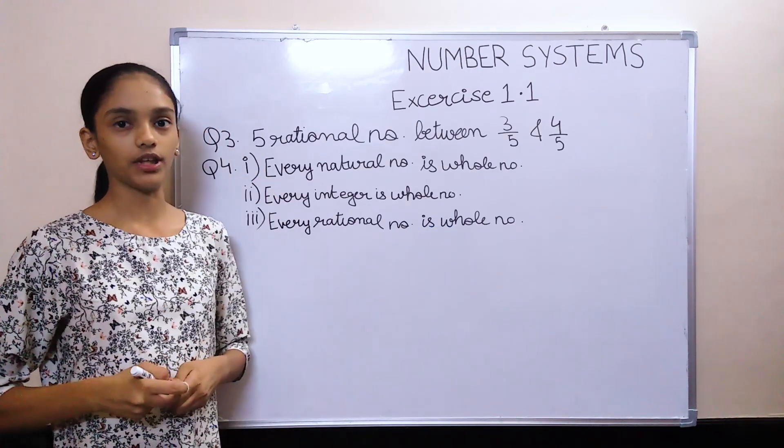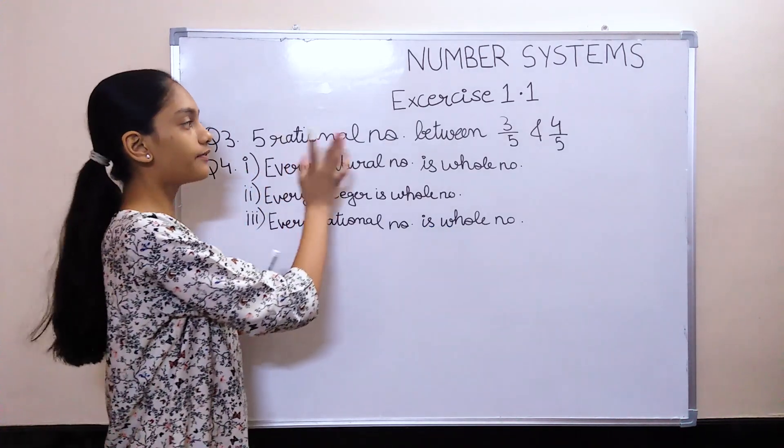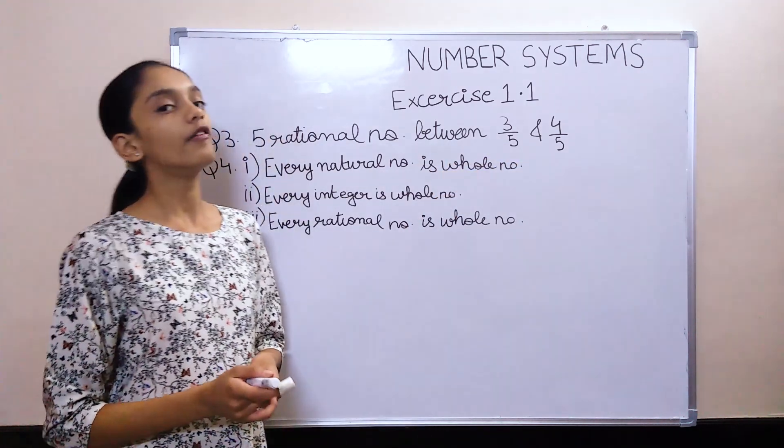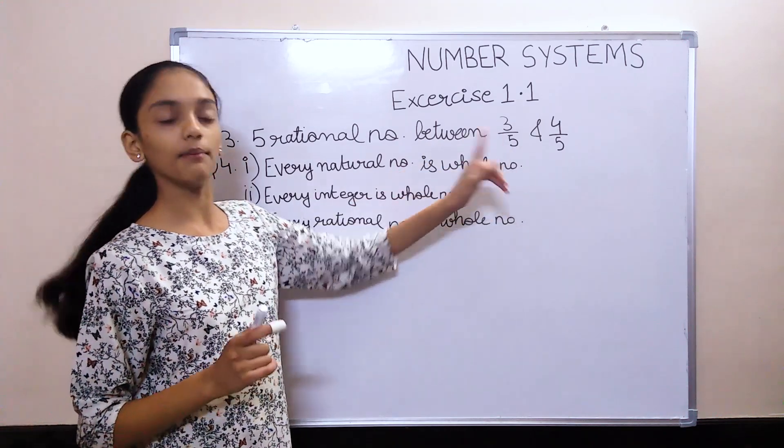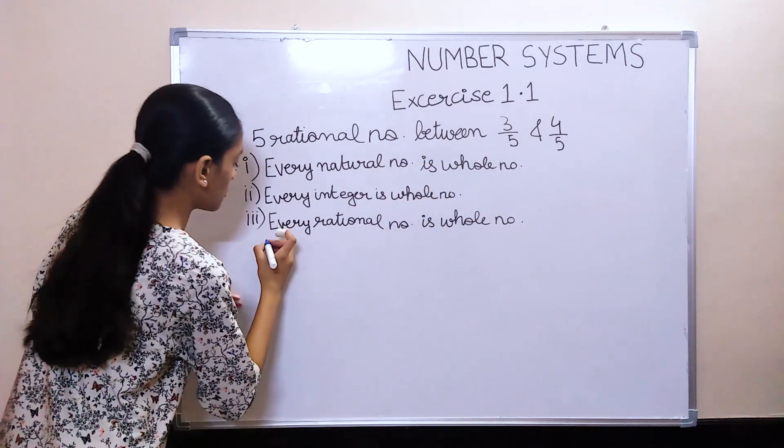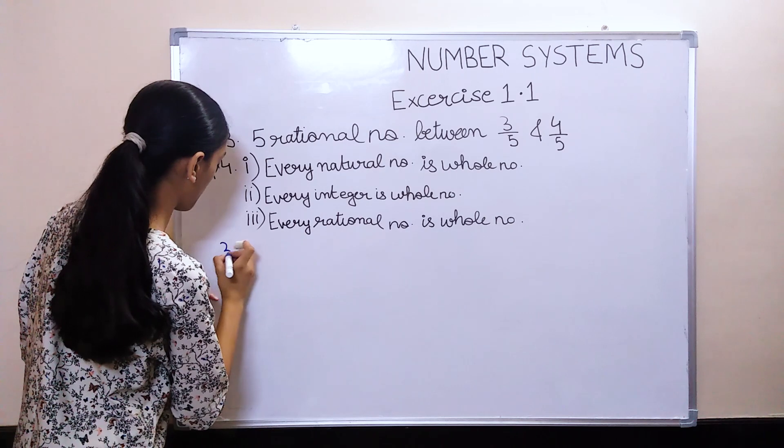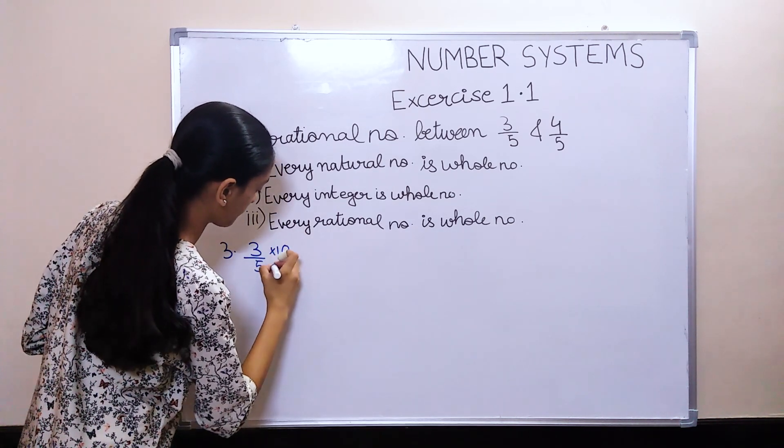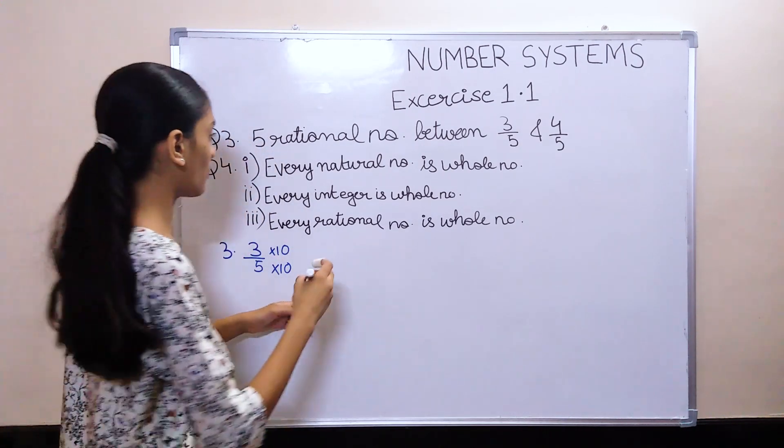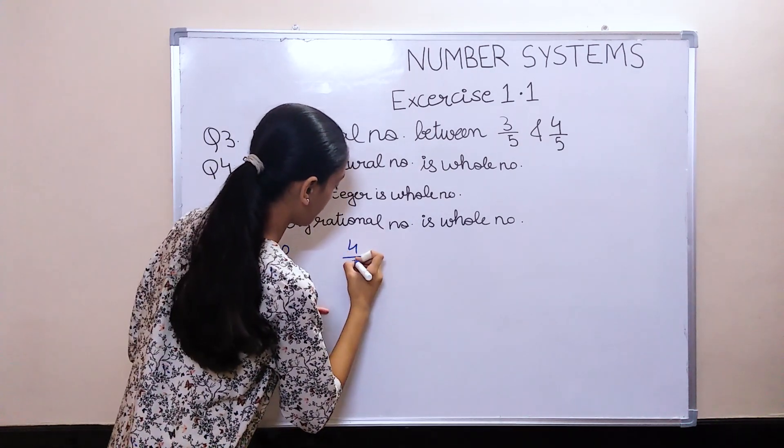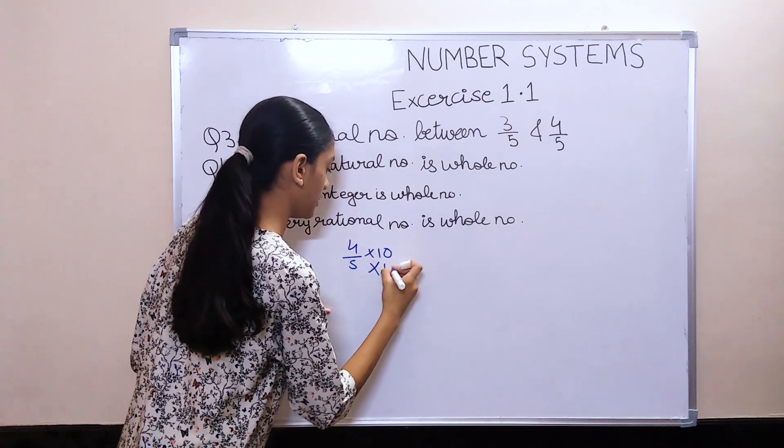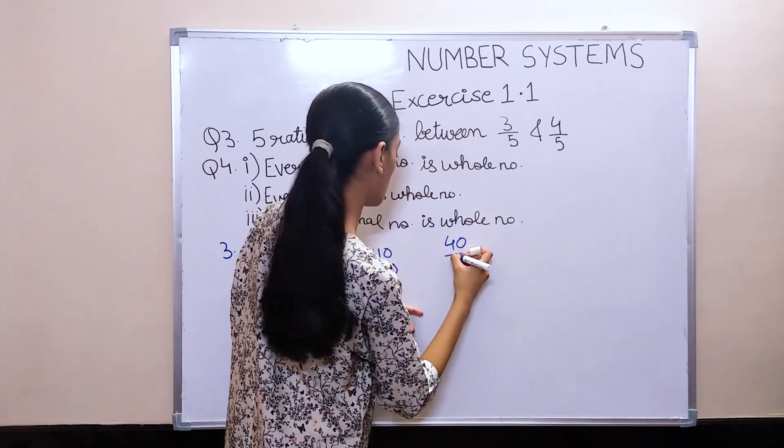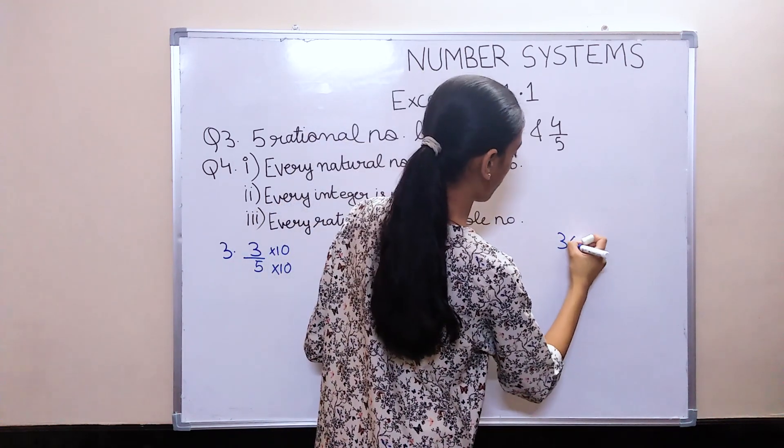Now let's move on to question number 3. Here we have to find 5 rational numbers between 3 upon 5 and 4 upon 5. We use the same method, multiply both by 10. So it would be 3 upon 5 times 10 and 4 upon 5 times 10, both in numerator and denominator. This gives us 30 upon 50 and 40 upon 50.